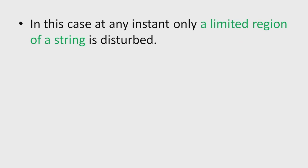In this case, at any instant, only a limited region of the string is disturbed. A pulse can be described as consisting of a single vibratory disturbance that moves through a medium with a constant amplitude.